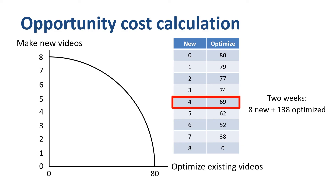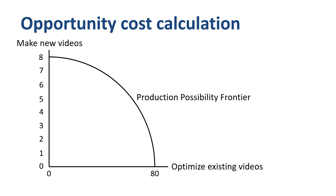In the chapter on economies of scale and specialization, he is probably going to give you a problem to work out that has an opposite conclusion. What if you don't want to be on the production-possibility frontier? Maybe you just want to make 4 new videos and optimize 40 existing ones, and then head out to the beach and spend the rest of the week in the sun. This point lies within the production-possibility frontier. Economists, who are obsessed with optimization and rationality, would call it possible, but not optimal.